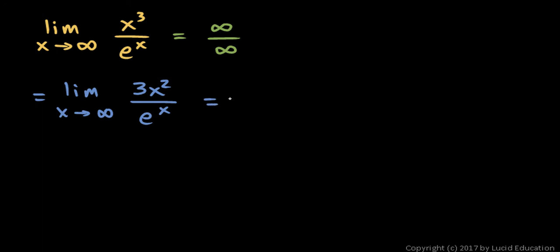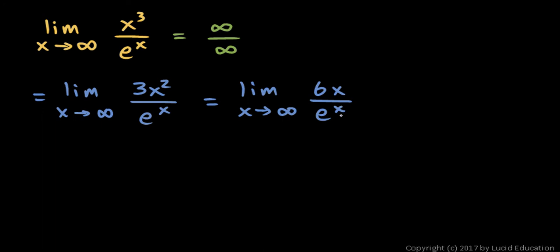So we can apply L'Hopital's rule again. This should equal the limit as x approaches infinity of the derivative of the numerator, which is 6x, over the derivative of the denominator, which is e to the x. Both of these expressions grow without bound as x increases, so it's still an indeterminate form of infinity over infinity. So we apply L'Hopital's rule again.